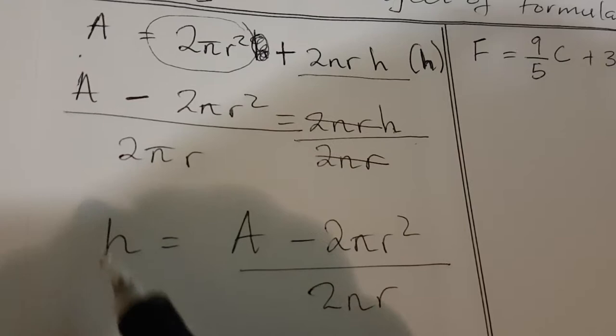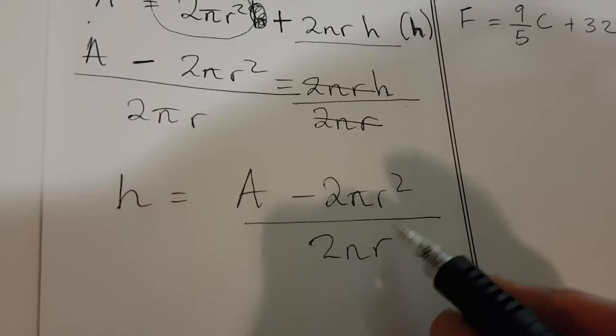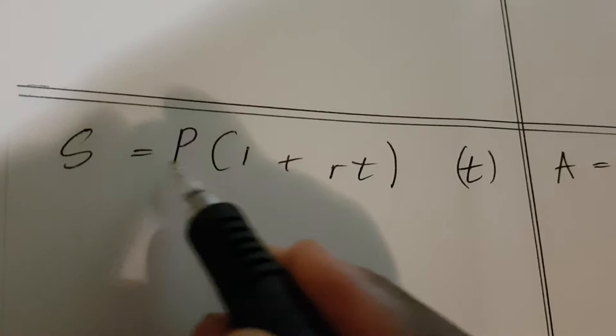This is how we make h the subject of formula. Remember, our focus is on making h the subject — we are not simplifying. So you don't cancel the 2s or the πs; these remain as they are, so long as h is now the subject.